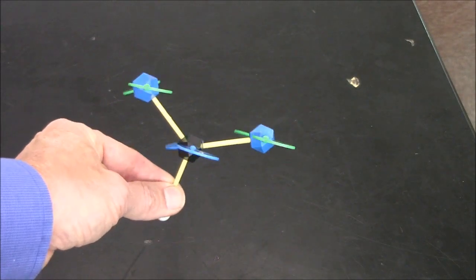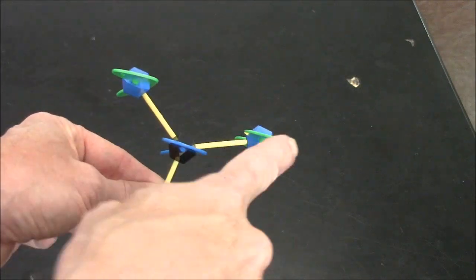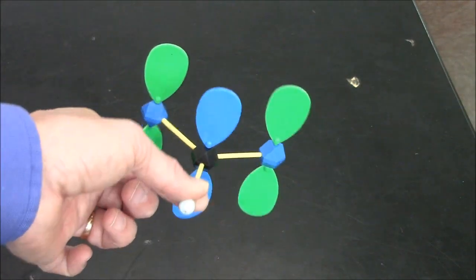From above, it looks like this. And this is sometimes called a pi network made of p orbitals. It looks like this.